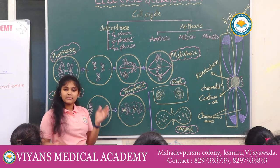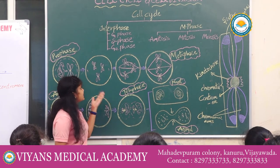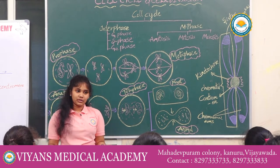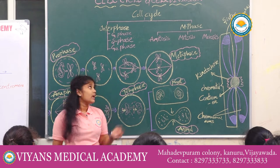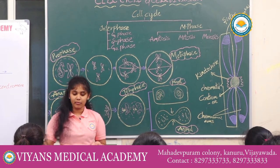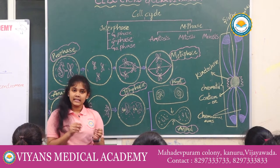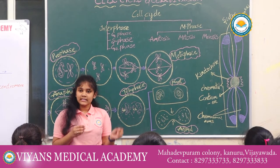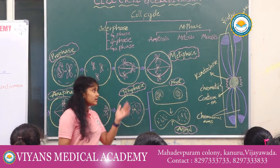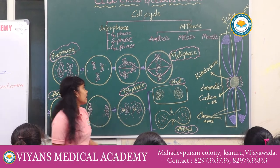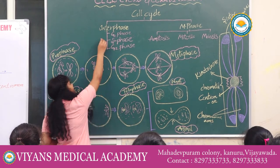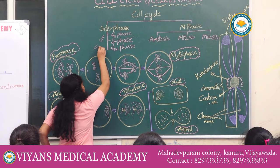Interphase is again subdivided into G1 phase, S phase, and G2 phase. In G1 phase, the cell is metabolically active and cell growth continues. Here we can find a checkpoint in which every cell is asked whether it is interested in further division or not. If a cell says it is interested in further division, then it is allowed to proceed. If it is not interested in division, it enters into another phase known as G0 phase.